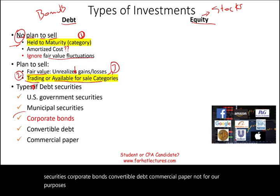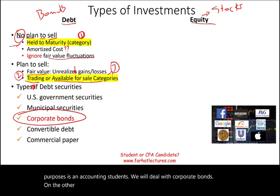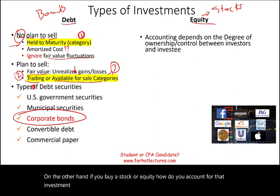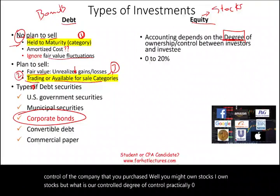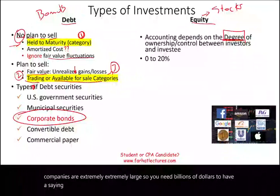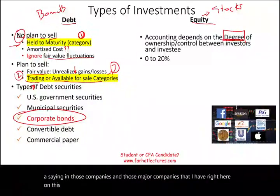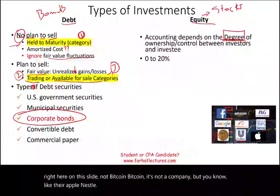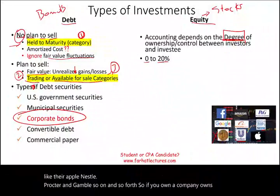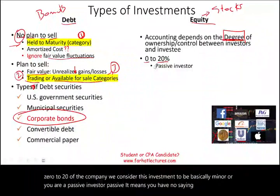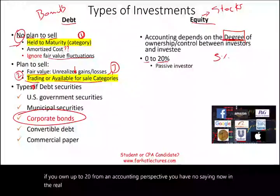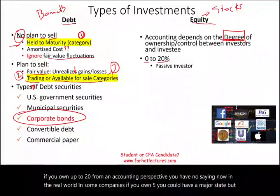On the other hand, if you buy a stock or equity, how do you account for that investment? It all depends on the degree of ownership — how much do you control of the company you purchased. You might own stocks, but what is your degree of control? Practically zero, because public companies like Apple, Unilever, Nestle, or Procter & Gamble are extremely large. If a company owns between zero and 20% of another company, we consider this investment to be minor — you are a passive investor. From an accounting perspective, you have no say.